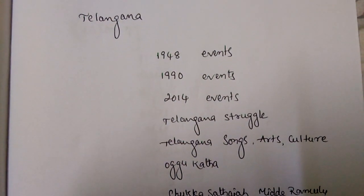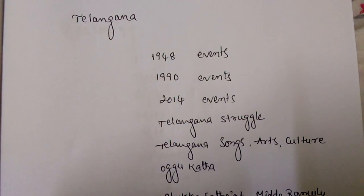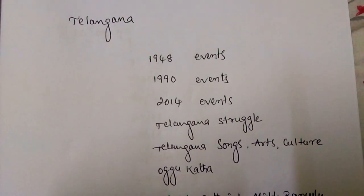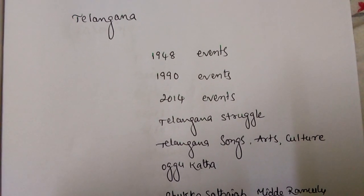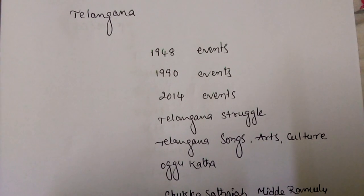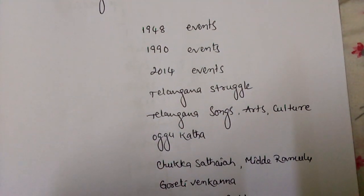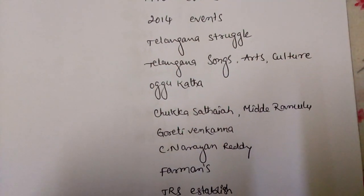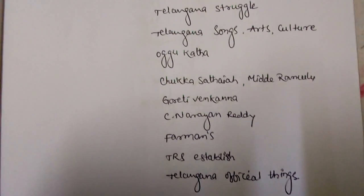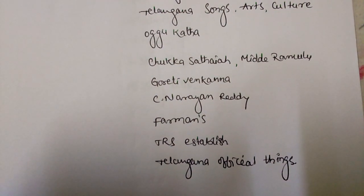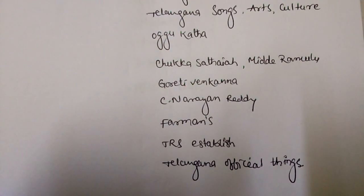From a Telangana point of view, there are three stages: 1948, 1990, and 2014. Events from 1948 up to 2014 are important, including the first, second, and final stages of the Telangana struggle, Telangana songs, arts, culture, Uggu Gata, about Chukka Satya, Midday Ramulu, Goreeti Venkanna, C. Narayan Reddy, Farmans, TRS Establishment, and other official Telangana things. These are well covered in the JO recruitment examination.